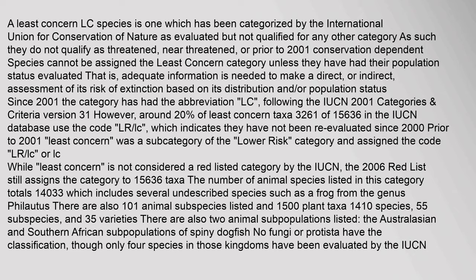A Least Concern (LC) species is one which has been categorized by the International Union for Conservation of Nature as evaluated but not qualified for any other category. As such, they do not qualify as threatened, near threatened, or prior to 2001, conservation dependent. Species cannot be assigned the Least Concern category unless they have had their population status evaluated.